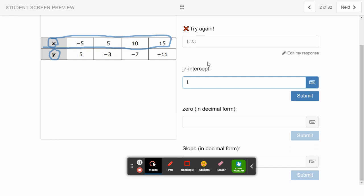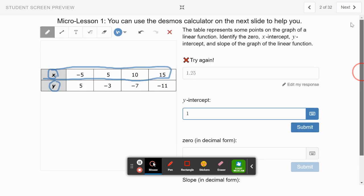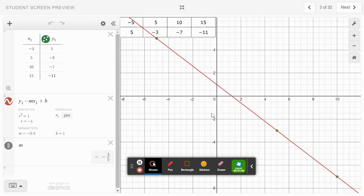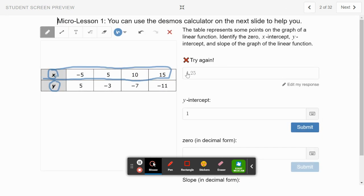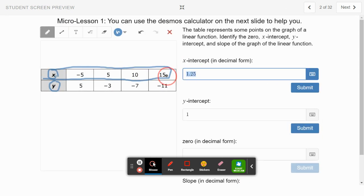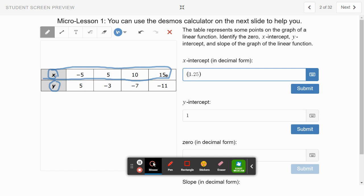Zero and x-intercept are the same thing, but it's saying try again. Maybe we didn't put it in right. Let's make sure we have all our values right. Our x-intercept is 1.25 comma 0. They probably want us to put in the actual point.